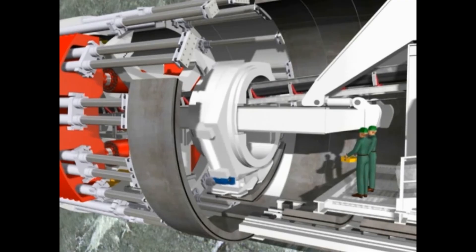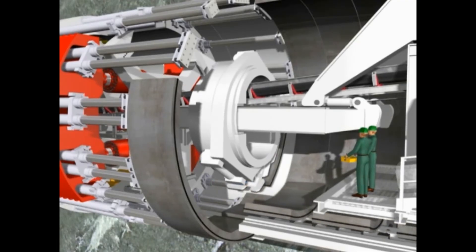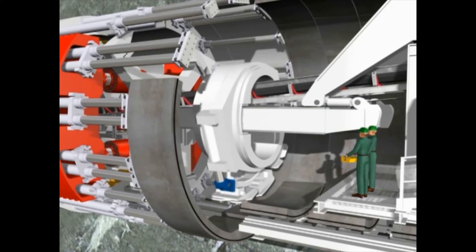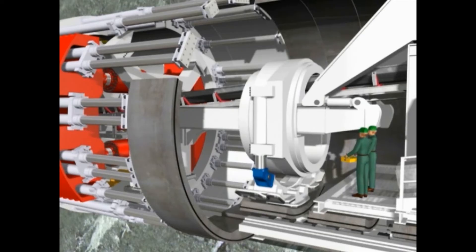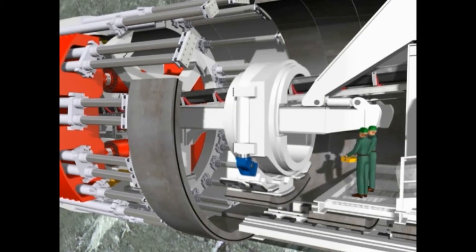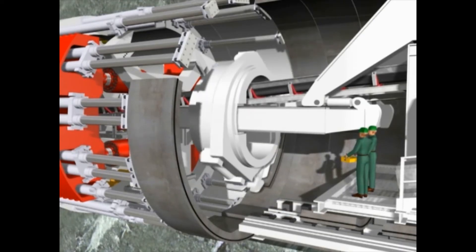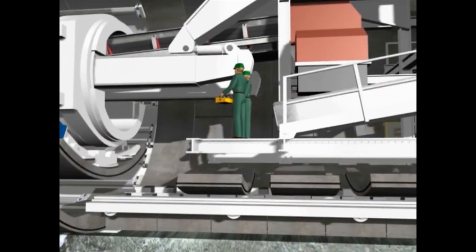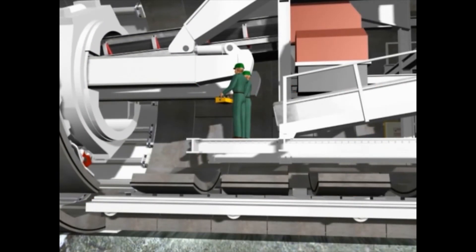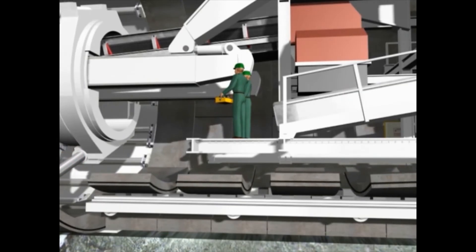Placement of the segments is done by the erector. The erector is controlled by a portable manual control with direct visual contact. The segments are lifted off the segment feeder by a vacuum suction plate. The erector is continuously supplied with segments by the segment feeder located in the tunnel invert.